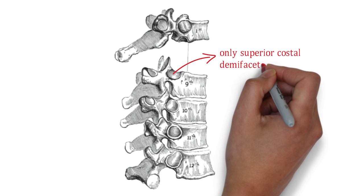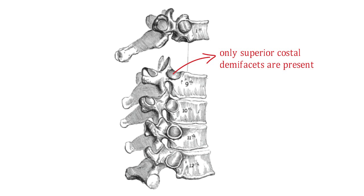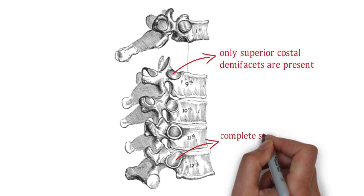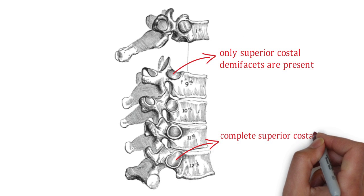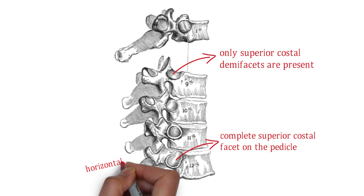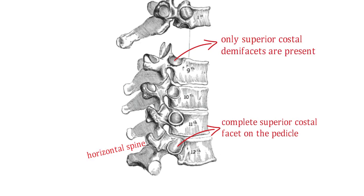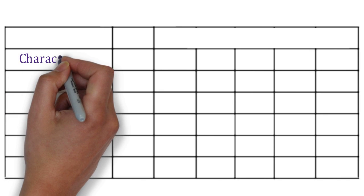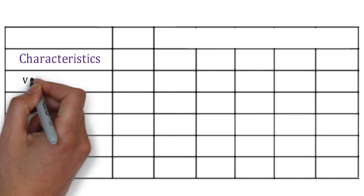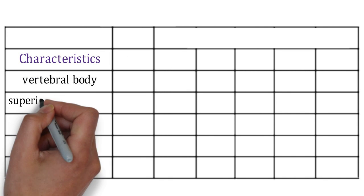The 12th thoracic vertebra has a complete superior costal facet on the pedicle and is characterized by the presence of a horizontal spine.